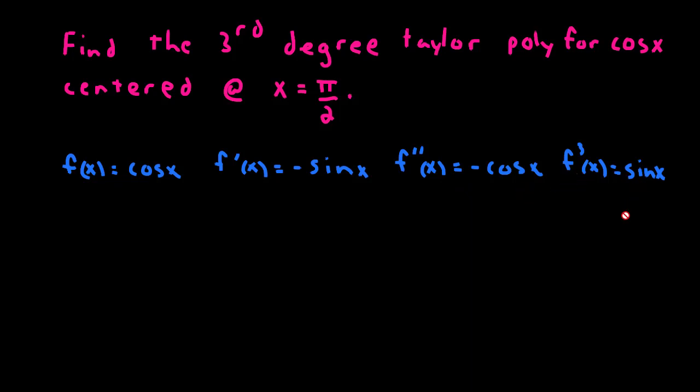Now, if I wanted a higher order polynomial, you will notice that at this point right here, my derivatives are just going to start to repeat. The fourth derivative is going to be equal to the cosine of x, and it's going to repeat this pattern. So we're just going to do a third degree polynomial. So what else do we need to know? We need to know what are all those derivatives evaluated at pi over 2. So I've gone ahead and gotten all those derivatives, and now we're ready to build our Taylor polynomial.